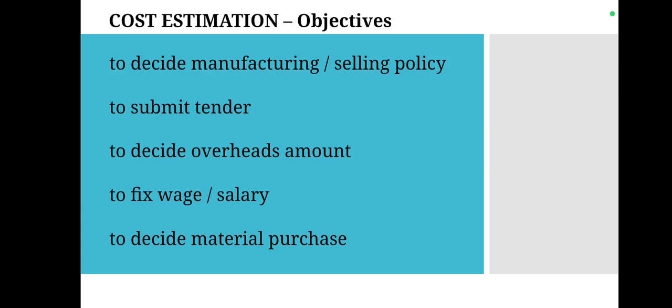The objectives of cost estimation: the cost estimation process decides whether we are going to manufacture or sell a product. It is a useful tool for taking policy decisions. If we want to submit a tender to any organization we have to do cost estimation. Similarly, it helps to decide overhead amounts before starting production, to fix the wage or salary to the employee, and to decide on material purchase.